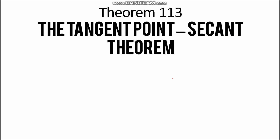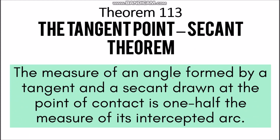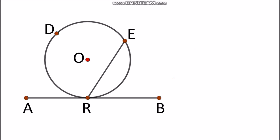Next is Theorem 113, the Tangent-Secant Theorem. This states that the measure of an angle formed by a tangent and a secant drawn at the point of contact is one-half the measure of its intercepted arc. We have segment AB as the tangent and segment RE as the secant. The two must intersect at the point of tangency, which is their common point on the circle.